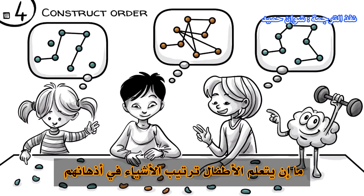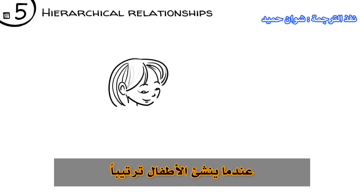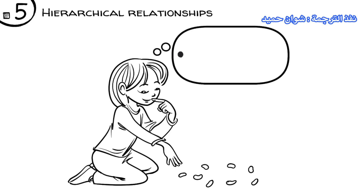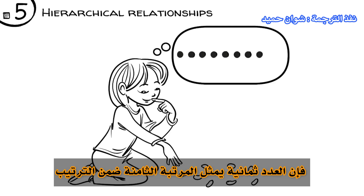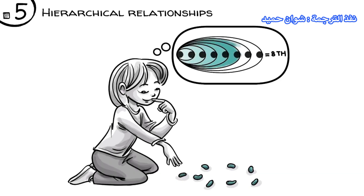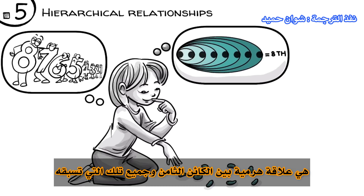Once children learn to order objects in their heads, they can put them in relationships — hierarchical relationships. As children construct order, they count the objects: 1, 2, 3, 4, 5, 6, 7, and 8. As they do that, the number 8 represents the 8th place in the order. In other words, 8 always includes 1, 2, 3, 4, 5, 6, 7. The idea of 8 is therefore a hierarchical relationship between the 8th object and all those preceding it.